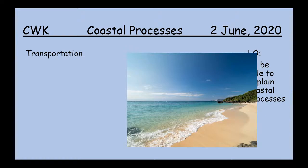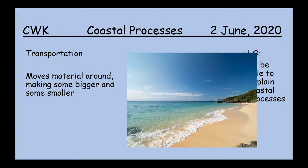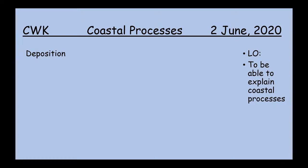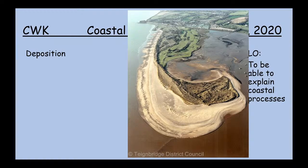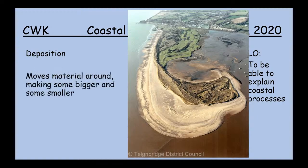Finally, deposition is where the sea drops off material, causing features to get larger and larger. If we look at this picture, this is something called a spit. Several hundred years ago the spit would have only been about half the size — the green area shown — but over time the sea has deposited more material and the spit has grown larger. It will probably continue to grow over time. So deposition is where the sea makes features or the coast get larger and larger.